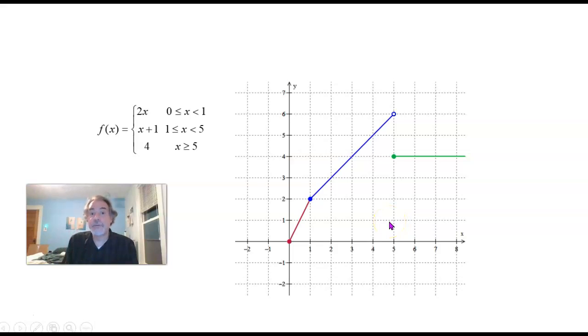Notice it does pass the vertical line test for being the graph of a function. And if I want to know what f of any particular number is, I could look at how this is defined, this rule here, or I could just go to a point on the graph. What's f of 4? Look at the point on the graph with an X coordinate of 4, and the Y coordinate that goes with it is 5.